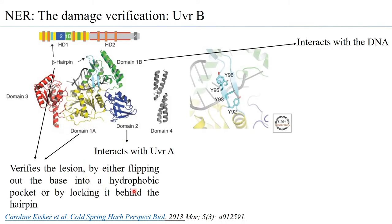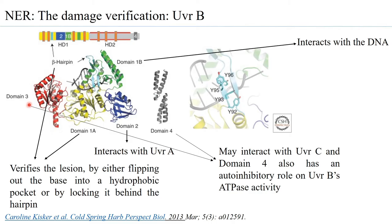In the flipping model, UVR-B verifies damage by flipping out the base. In the locking model, it locks into the DNA damage position to verify it. A lot still needs to be done to find out the fine molecular arrangements when UVR-B2 helps in verifying the damage. Domains 3 and 4 of UVR-B help in interacting with UVR-C, which is one reason UVR-B is considered the central key molecule in the NER pathway — it binds to UVR-A, binds to the DNA, and binds to UVR-C.